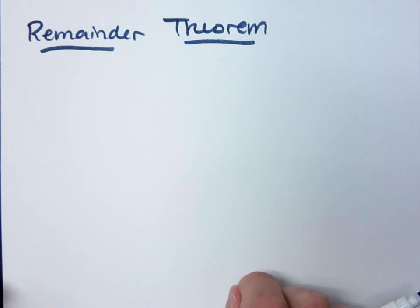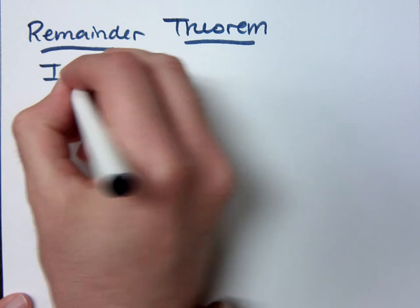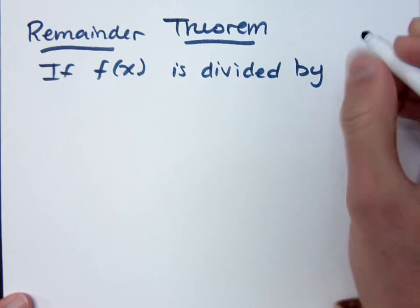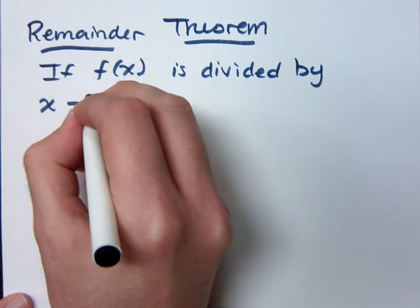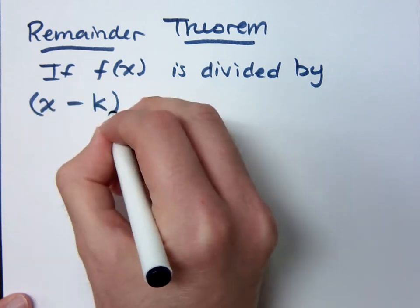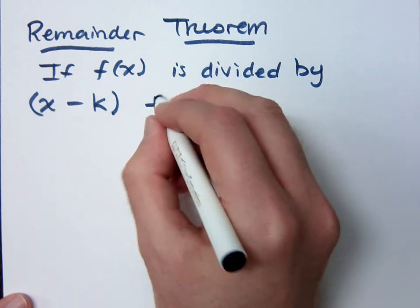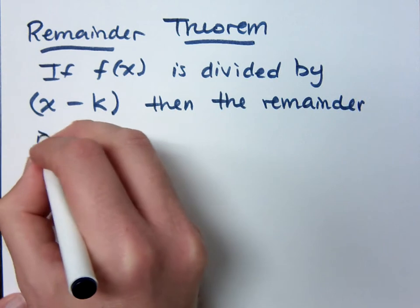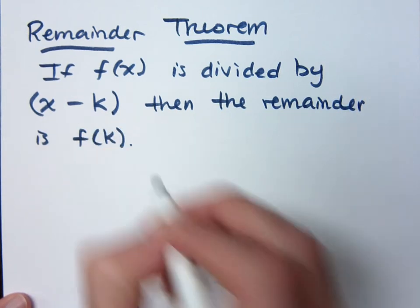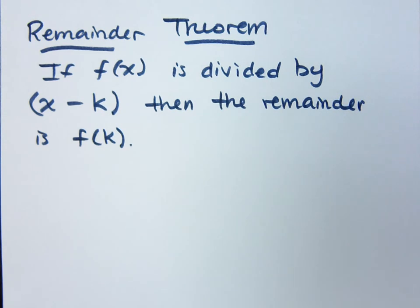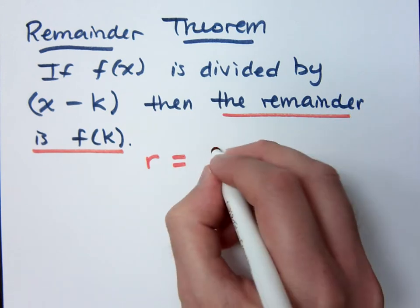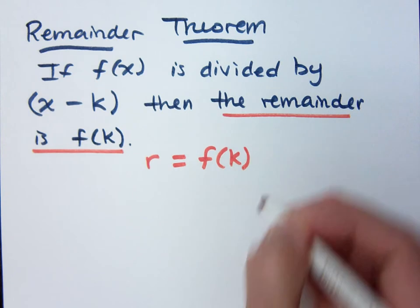I love this remainder theorem, and this is what it says. It says that if f of x is divided by the factor x minus k, then the remainder is f of k. That means that the remainder you get when you do synthetic division is equal to your function value if you plug that in.